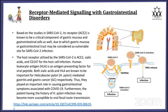Receptor-mediated signaling with gastrointestinal disorder. ACE2 receptors are highly present in the GI tract; therefore, the gastric mucosa or gastrointestinal tract may be considered a vulnerable site for SARS-CoV-2 infection and is also a site of replication for the virus. The host receptors utilized by SARS-CoV-2 are ACE2, sialic acid, and CD147 for host cell infection. Human leukocyte antigen (HLA) is a marker present in our body that distinguishes between self and non-self cells. Both sialic acid and HLA are known to be important for Helicobacter pylori-mediated gastritis and gastric cancer — that is, inflammation of the gastric linings.